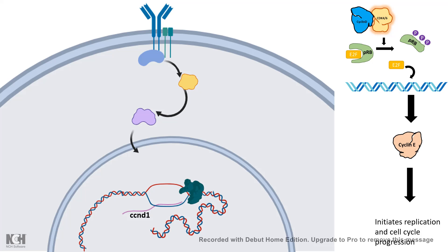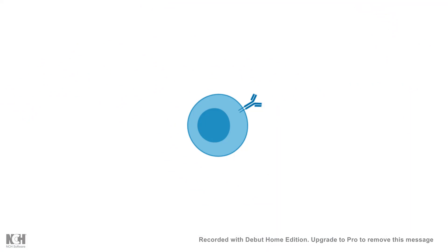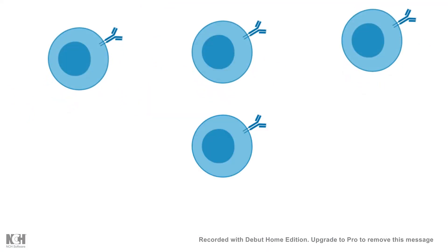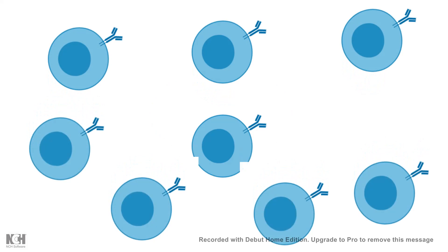Cyclin D is critically important for cell cycle progression because it phosphorylates pRB, allowing E2F to bind to its targets and give rise to Cyclin E, which in turn is important for replication and cell cycle progression. So whenever Cyclin D is produced as a result of antigen binding, the B cell can divide and form multiple B cells — meaning B cell proliferation can occur.